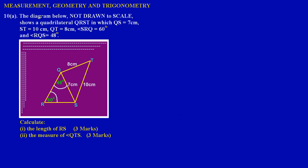In this lesson we're going to be looking at a typical measurements, geometry and trigonometry question taken from the CXC past paper. May 2012, question 10a states that the diagram below, not drawn to scale, shows a quadrilateral QRST in which QS is equal to 7 centimeters, ST is equal to 10 centimeters, QT is equal to 8 centimeters, angle SRQ is equal to 60 degrees, and angle RQS is equal to 48 degrees.